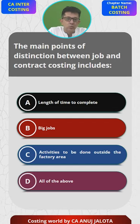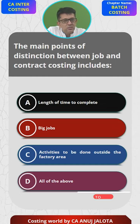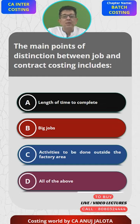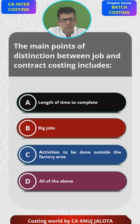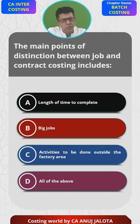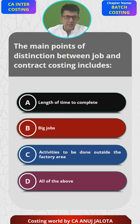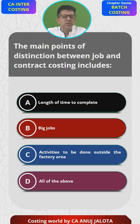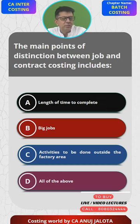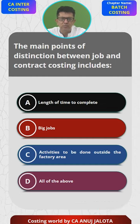Contract costing is applicable to companies in the construction business — contracts like making a building, a flyover, a dam, a bridge, etc. These all take a lot of time to complete. For example, an interior decorator got an order to make furniture for a particular house, and a construction company got an order to make a bridge between, say, Mumbai and Delhi. The first company follows job costing; the second follows contract costing.